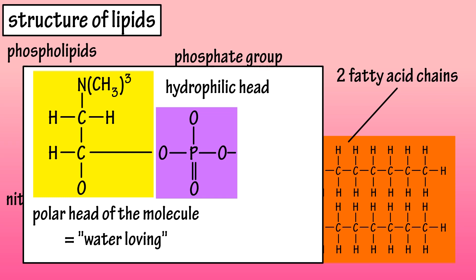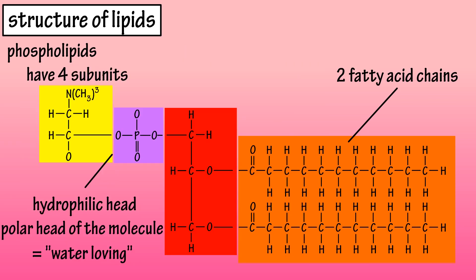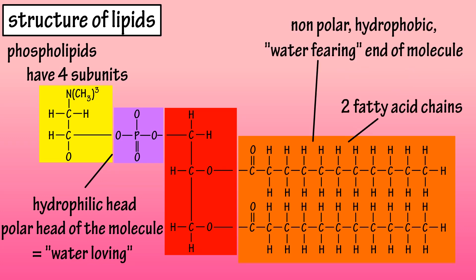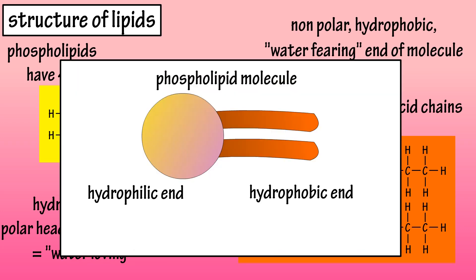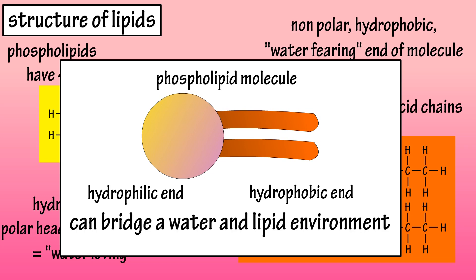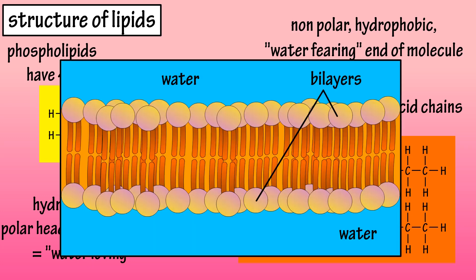The fatty acid end is non-polar, so it's called hydrophobic, which means water-fearing. This property — having a hydrophilic and a hydrophobic region — allows this molecule to join, or bridge, a water environment and a lipid environment. So in water, these molecules will form bilayers, with the fatty acid tails facing each other and the heads facing outwards, as you can see here. Phospholipids are the main component of cell membranes.